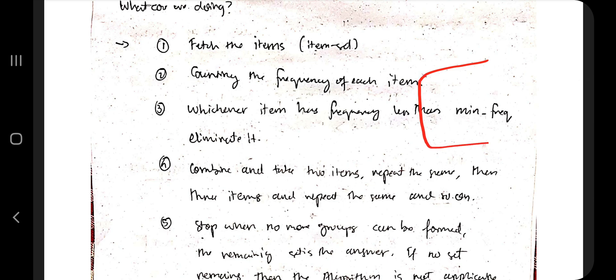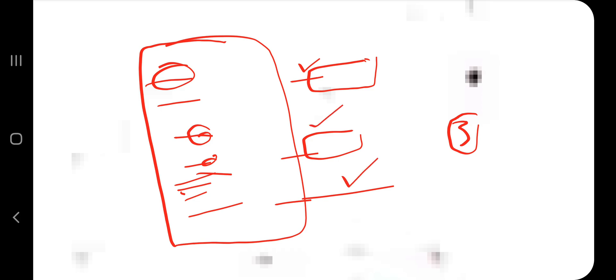The first one is the Apriori algorithm. To understand it, think of it as a story: suppose you went to a market with many items to purchase — milk from different brands, butter, noodles, and so on. You classify how many times each item has repeated. Whichever item has repeated more than a minimum number of times (say, three) is the one you keep; items below that count are eliminated.